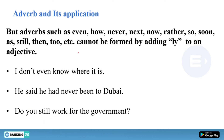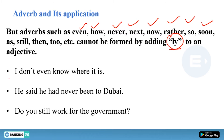Some adverbs like 'even,' 'how,' 'never,' 'next,' 'now,' 'rather,' 'so,' 'soon,' 'as,' and so on have their own fixed forms. You cannot make any changes to them — you cannot add L-Y. Examples: 'I don't even know where it is,' 'You've never been to Dubai,' 'Do you still work for the government?' All these words are adverbs in their own right.